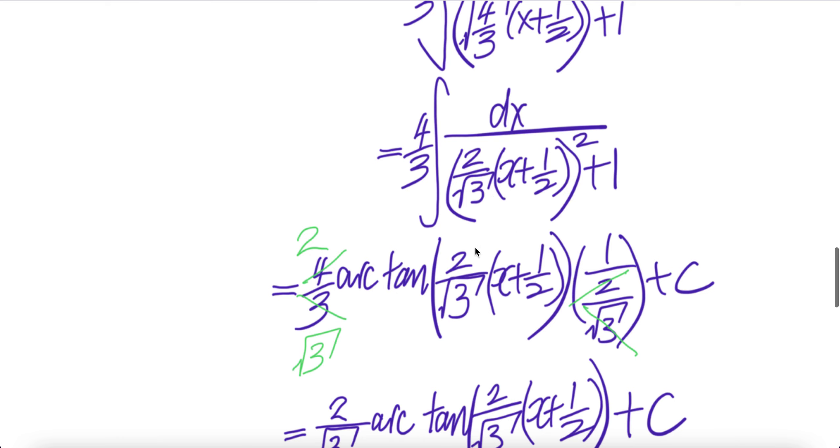It will be arc tangent of whatever the thing here is. Check for coefficient in front of x, one here, two over square root three. They are different. Therefore, we have to divide by two over square root three.